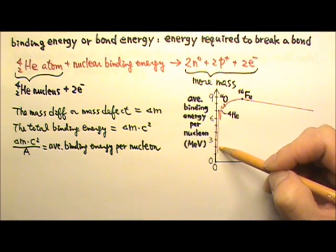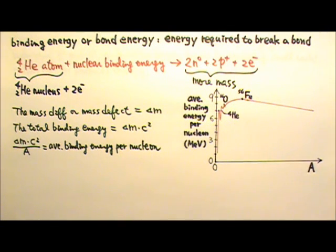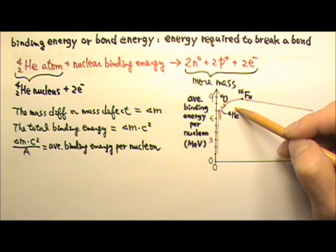Fusion combines small nuclei to form a bigger, more stable nucleus. Both fission and fusion release energy, but because the graph is very steep for very low mass numbers, fusion can be expected to release more energy per nucleon than fission.